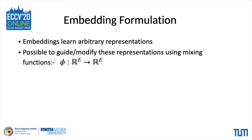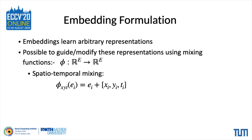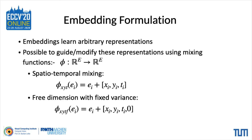By default, the representations of the embeddings learned by the network are arbitrary. It is possible to guide the network to learn useful representations by using so-called mixing functions. In StemSeg, we either use a spatiotemporal mixing function, where the output 3D embeddings are modified by adding the per-pixel coordinate locations — where X, Y, and T represent the width, height, and temporal dimensions respectively — or we add additional free dimensions, which gives more representational power to the embedding by providing more degrees of freedom. The free dimension F in this four-dimensional output embedding learns arbitrary representation but with a fixed variance.